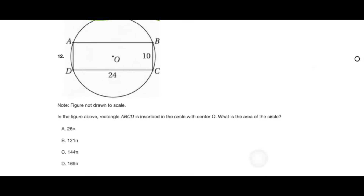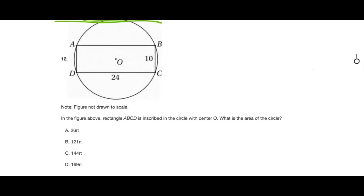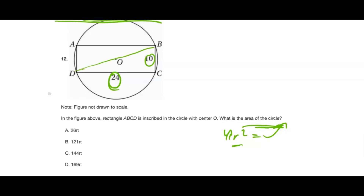The problem says rectangle ABCD is inscribed in a circle with center O; find the area of the circle. They give us side lengths 24 and 10. To find the area of a circle we use π r². We need to find the radius. We utilize the rectangle: drawing a diagonal from point D across O to B creates a right triangle inside the rectangle, and that side length DB is also the diameter. If we find DB, we take half of it as the radius, square it, and find the area.